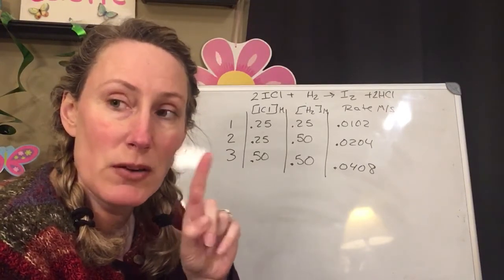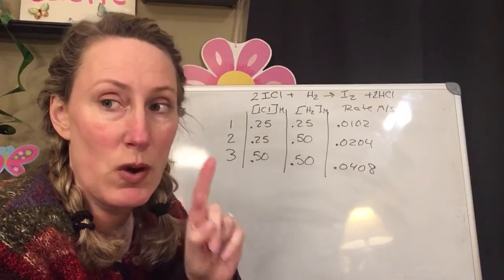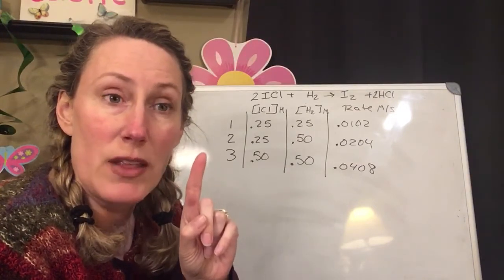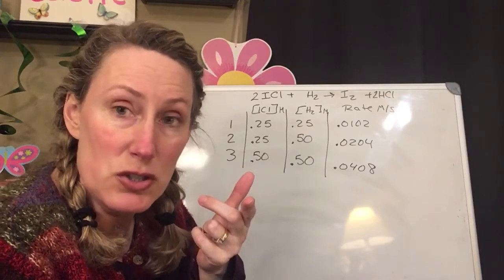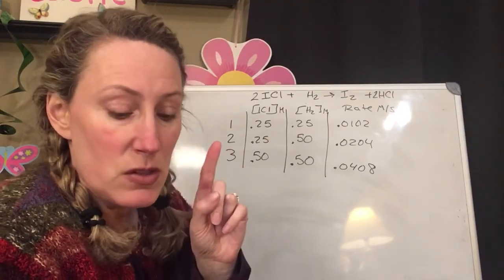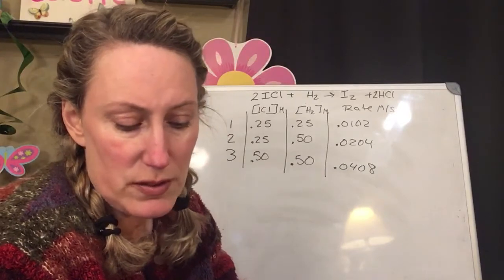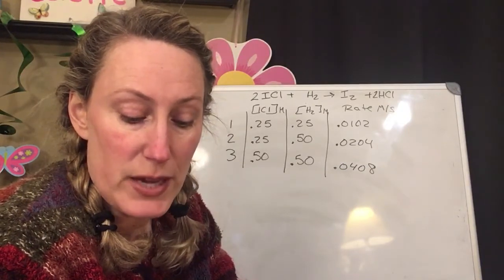So when I'm comparing trials, I have to make sure only one thing changes, so that the change that I see is only due to the one thing that I'm watching. Does that make sense? So it says use this information to determine the rate for this reaction.